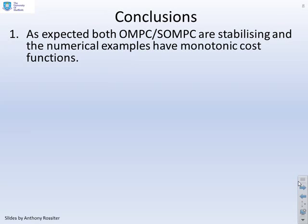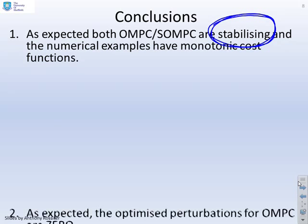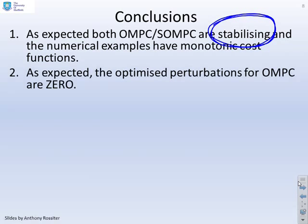So some conclusions. As expected, both OMPC and SOMPC are stabilising. And the numerical examples have a monotonic cost function. So that's important because we couldn't say that for GPC unless we used infinite horizons. So here we have a guarantee that these algorithms are stabilising. As expected, the optimised perturbations for OMPC are zero.